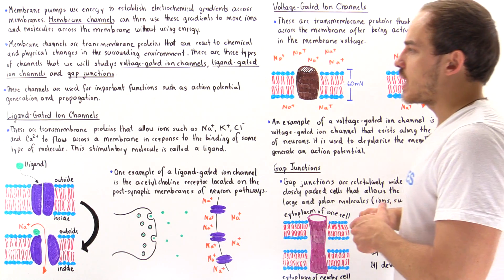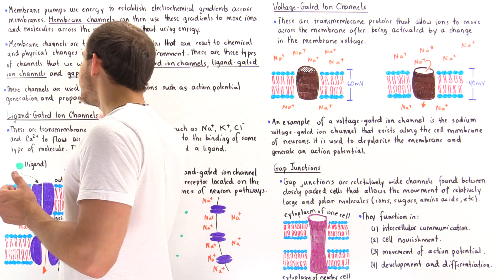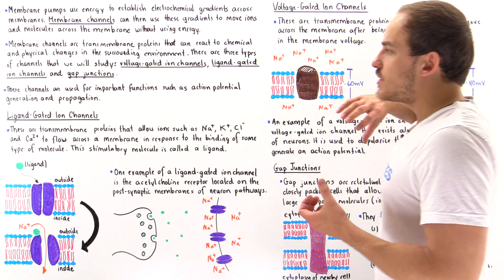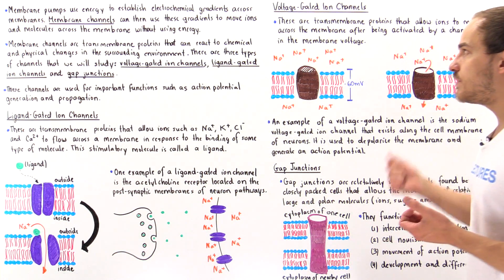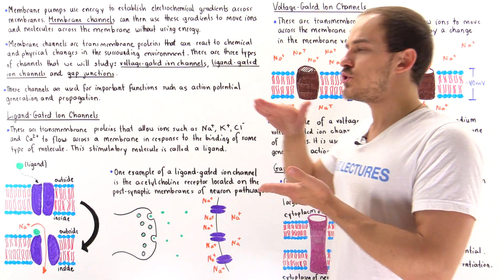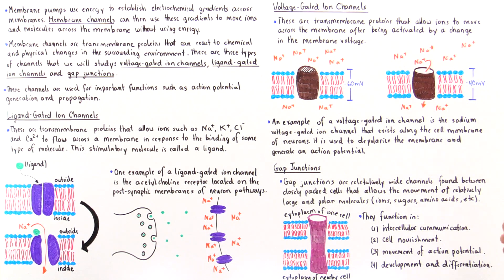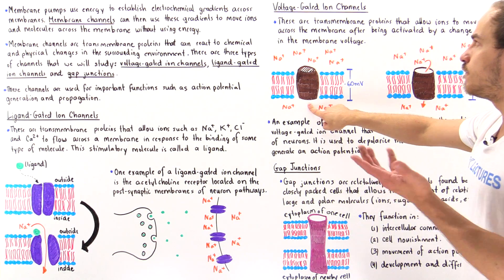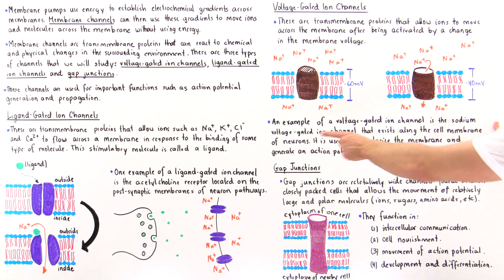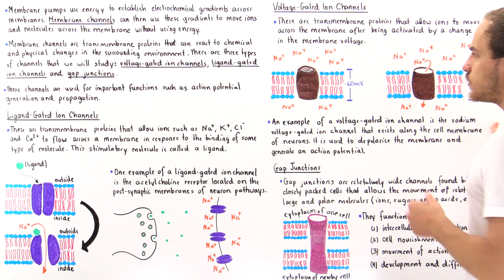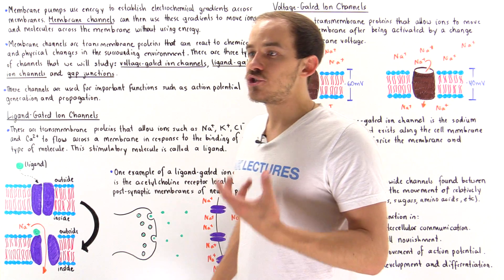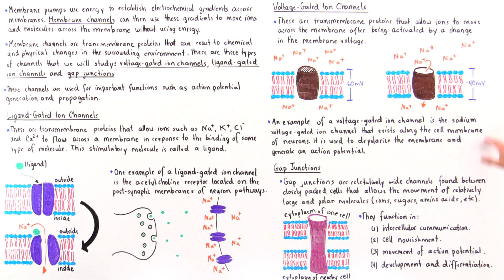Now let's move on to voltage-gated ion channels. Unlike ligand-gated ion channels, which respond to the binding of stimulating molecules, these transmembrane proteins respond to a change in the electric potential difference between the two sides of the membrane — a change in the membrane voltage. One voltage-gated ion channel we'll focus on in detail is the sodium voltage-gated ion channel, which exists across the axon membrane of neurons and plays a very important role in generating and propagating action potentials along that axon.